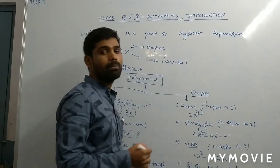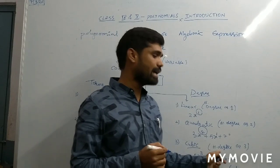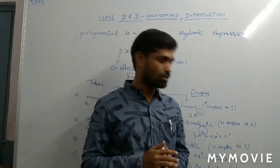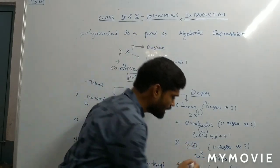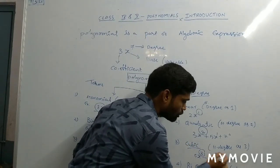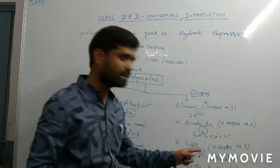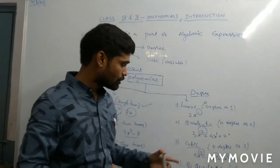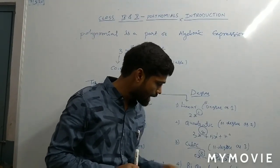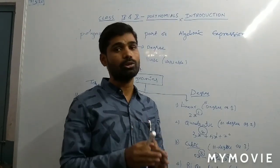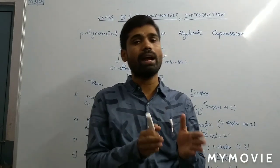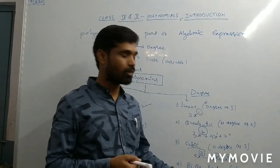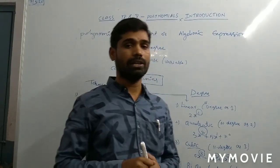Now coming to the cubic polynomial. Cubic means the highest degree is three. You know that cube means three. So here the highest degree is three, and it is called a cubic polynomial. The final fourth type is bi-quadratic. Previously we know quadratic; now bi-quadratic means two twos — so the highest degree is four. That is called a bi-quadratic polynomial.